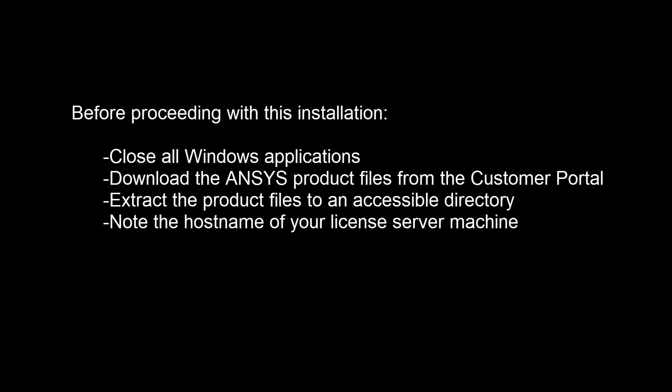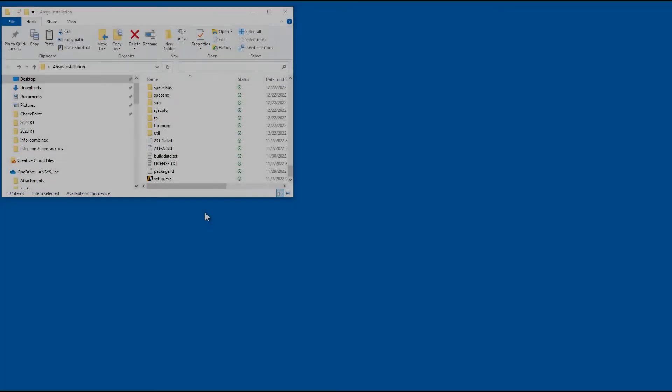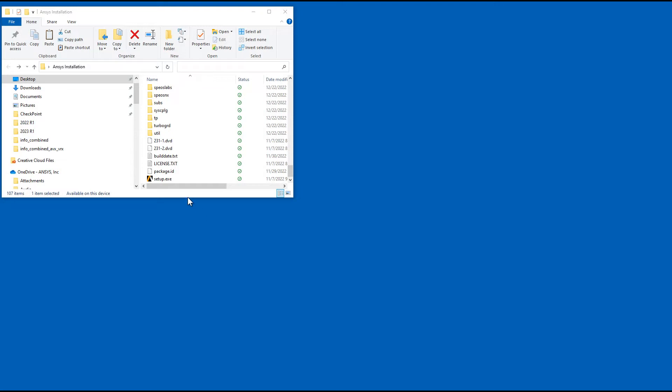Before proceeding, close all Windows applications. You will need to download product files from the ANSYS Customer Portal and extract them to an accessible directory. Have the hostname of the License Server machine available. This tutorial will begin in the directory containing the extracted installation files.